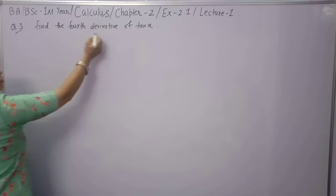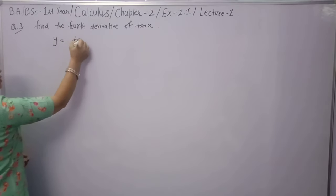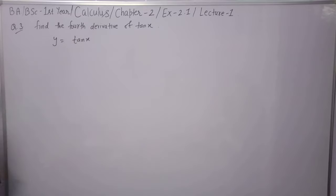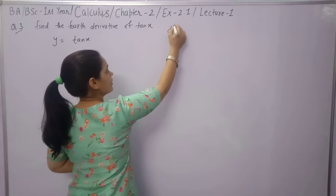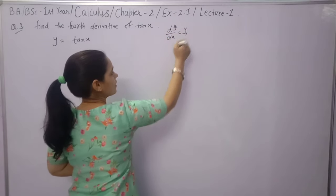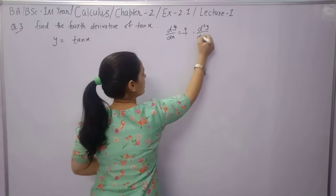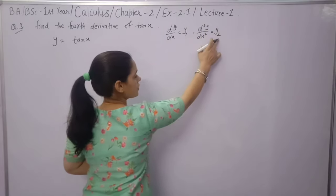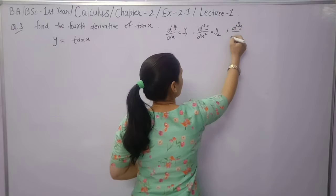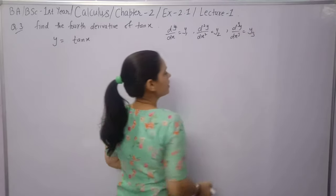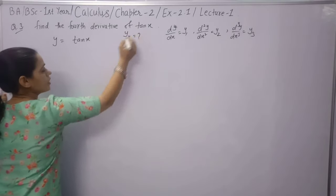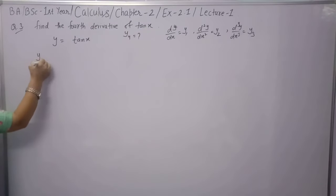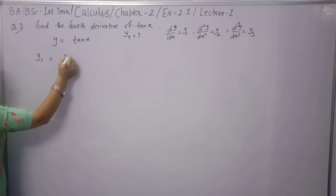Question 3: Find the fourth derivative of y = tan(x). We denote derivatives as y1, y2, y3, y4. Let us find them one by one. dy/dx = y1 = sec²(x). The second derivative y2: differentiate sec²(x) — bring down 2, then sec(x) × sec(x)tan(x), giving 2sec²(x)tan(x).